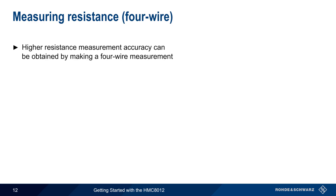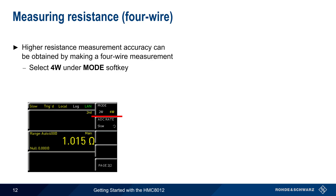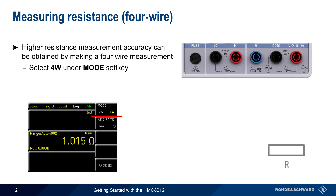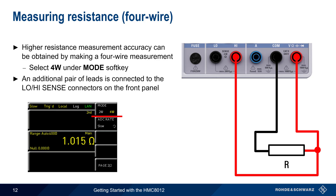Greater measurement accuracy can be obtained by making a 4-wire resistance measurement. This is done by changing from 2-wire mode to 4-wire mode under the mode menu. In addition to the standard 2-wire connection, another pair of leads is connected from the low-high sense connectors to a point close to the measured resistance. In this way, the HMC can compensate for the resistance in the measurement leads, improving accuracy for very low resistances.